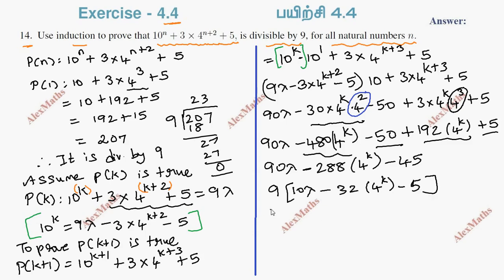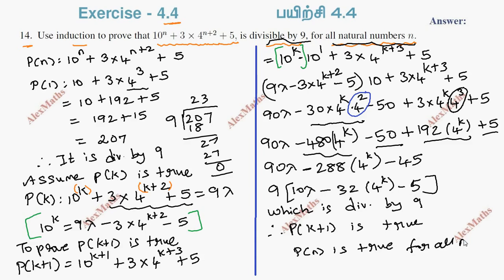This term minus 50 plus 5 is minus 45. So we have 9(10λ - 32 × 4^k - 5), which is divisible by 9 for all natural numbers. Therefore P(k+1) is true. Therefore P(n) is true for all n belonging to natural numbers.